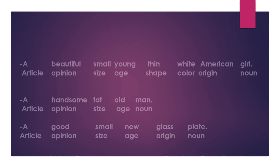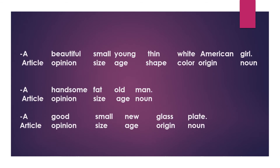In the sentences you can see it clearer. In here everything is very clear: A is article, beautiful is opinion, small for size, young for age, thin for shape, white for color, American for origin, girl for noun.